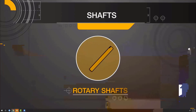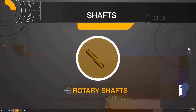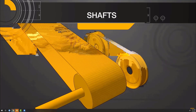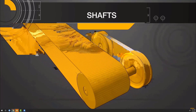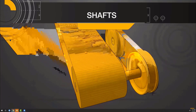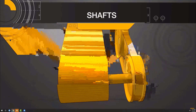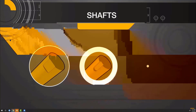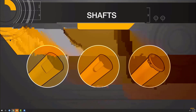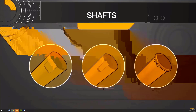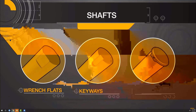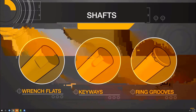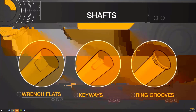Rotary shafts are designed to be used in power transmission applications. Oftentimes rotary and drive shafts are used interchangeably. While they're used in identical applications, there are important differences that will be discussed in a subsequent episode. Misumi's rotary shafts offer a plethora of alterations to accommodate various mating components. Wrench flats, keyways, and retaining ring grooves are only a few of the standard alterations offered to join rotary accessories.